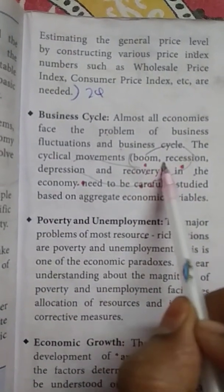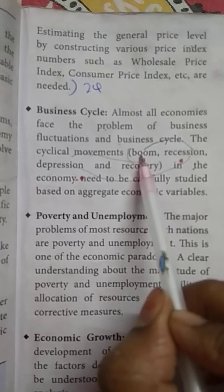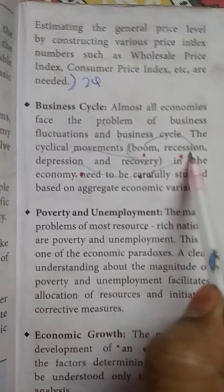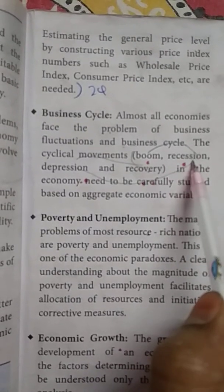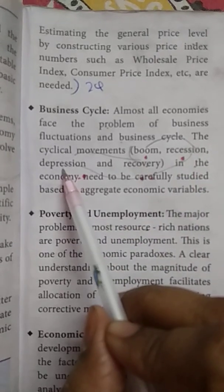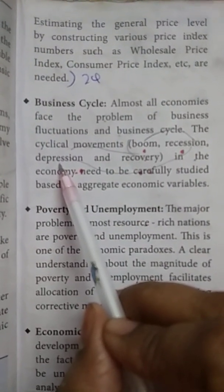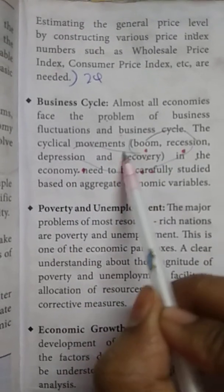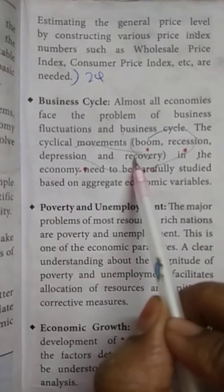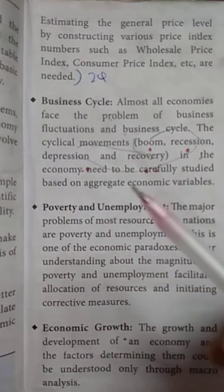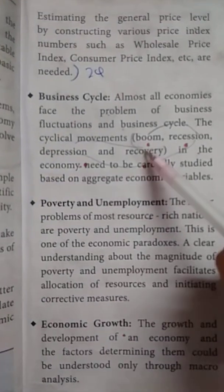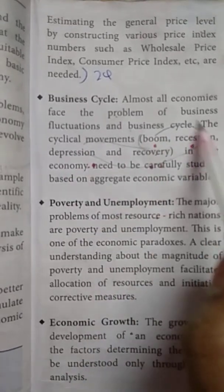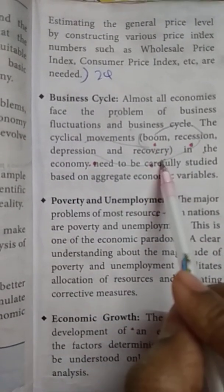After boom, recession comes — this is a slow, declining phase where business does not improve. The next stage is depression, where there will be lots of loss. After depression, there is recovery. In the depression stage, one understands the situation and how to improve, developing recovery, and eventually returning to the boom stage. This is how macroeconomics is important in this study.